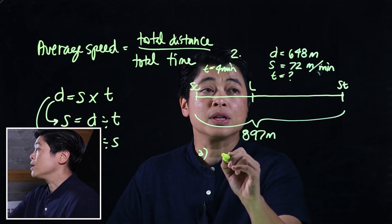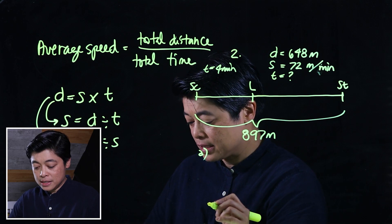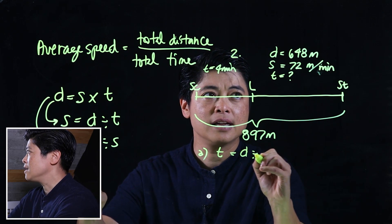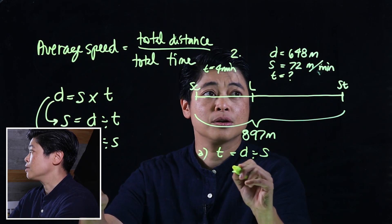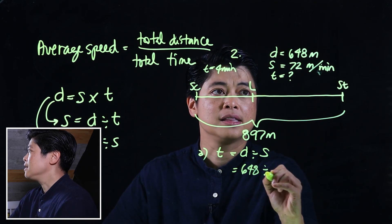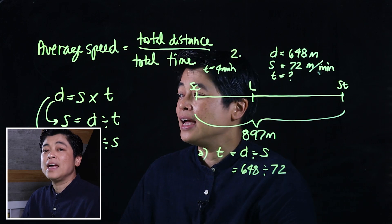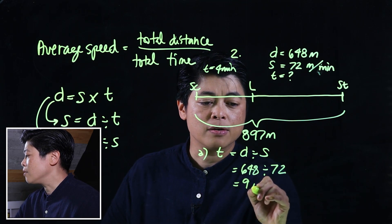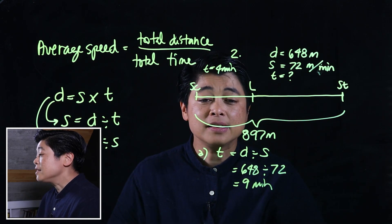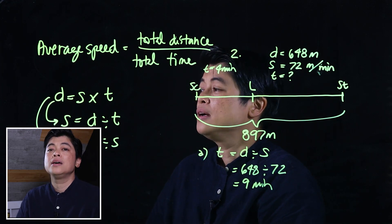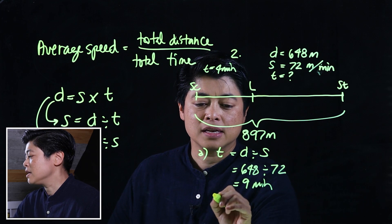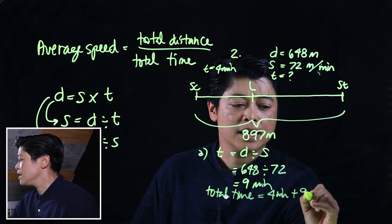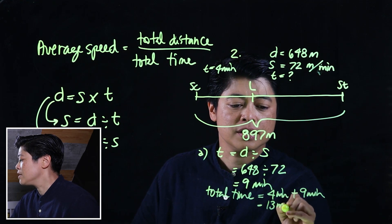Using the formula, time equals distance divided by speed — that's 648 divided by 72. Using a calculator, that gives us 9 minutes. The question asks for the total time of the journey, so total time is 4 minutes plus 9 minutes, which makes it 13 minutes.